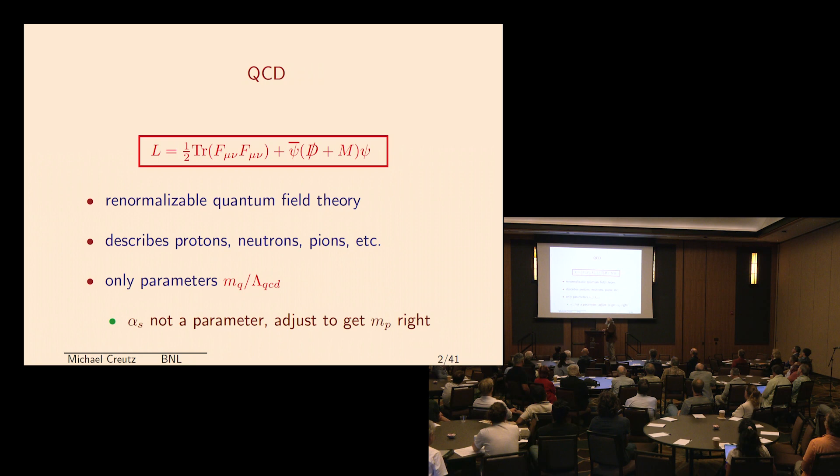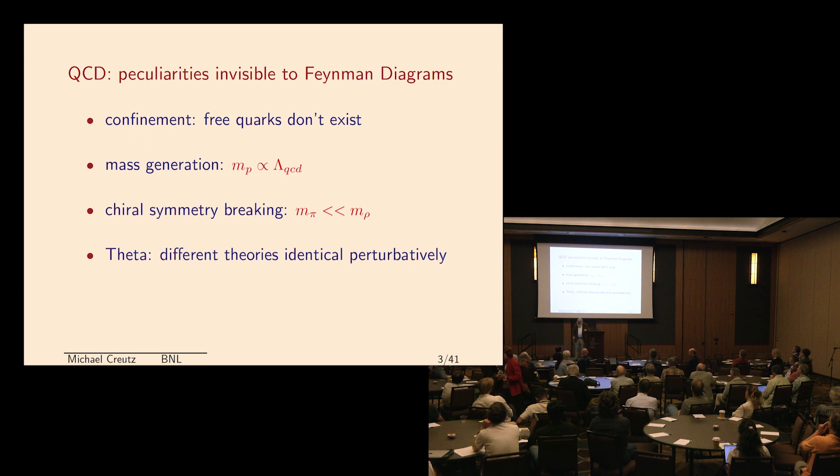QCD is this amazing theory, it's really quite remarkable. It's a renormalizable quantum field theory which describes many of our particles, the protons, the neutrons, the pions, etcetera. What's remarkable about this theory is that it really doesn't have very many parameters.